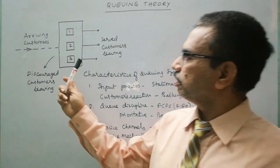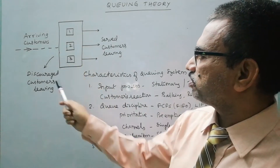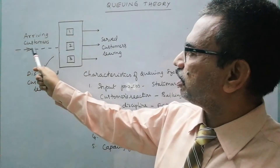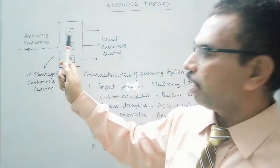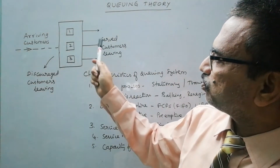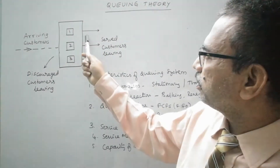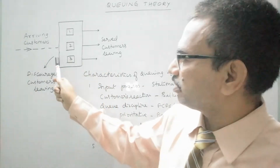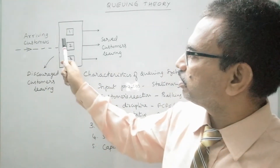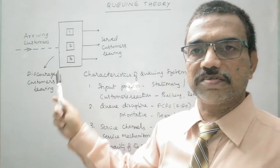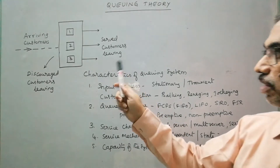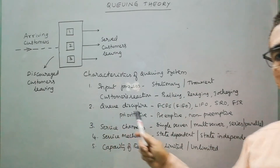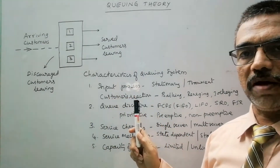Here you can see a system — a service mechanism with three servers — and the customers are arriving. Those who got satisfied with the service, or whose service is complete, are leaving the queuing system. And some of the discouraged customers are leaving the system without getting the service. Now here we have to understand the total process. There are a few characteristics which we observe in many of the queuing models.